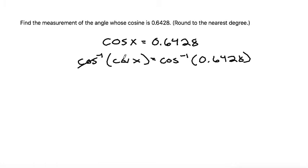The cosine inverse function cancels out the cosine function, which is why we did that, to leave us with x. So we've solved for x, and now we need to find out what's the cosine inverse of 0.6428.